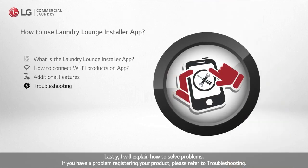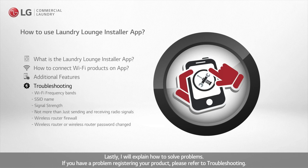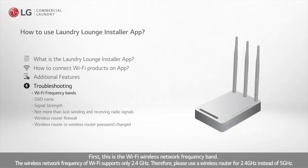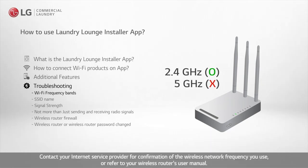Lastly, I will explain how to solve problems. If you have a problem registering your product, please refer to troubleshooting. First, this is the Wi-Fi wireless network frequency band. The wireless network frequency of Wi-Fi supports only 2.4 GHz. Therefore, please use a wireless router for 2.4 GHz instead of 5 GHz. Contact your internet service provider for confirmation of the wireless network frequency you use, or refer to your wireless router's user manual.